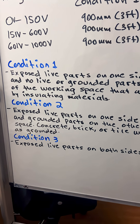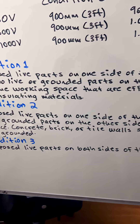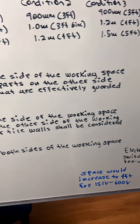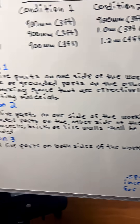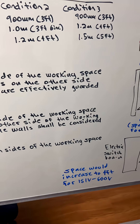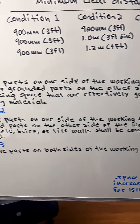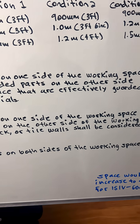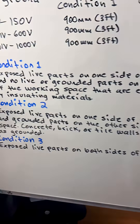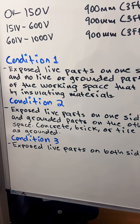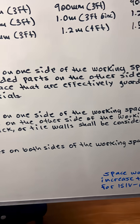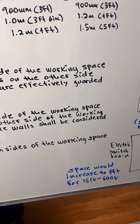For condition 2, it's exposed live parts on one side of the working space and grounded parts on the other side. Concrete, bricks, or tile walls should be considered as grounded. And for condition 3, it's exposed live parts on both sides of the working space.